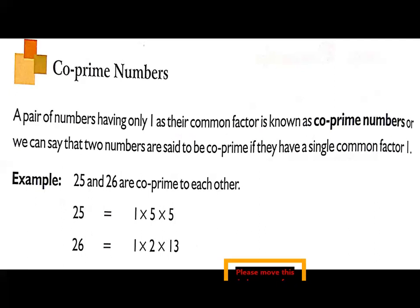These are the three types of numbers we discussed today. The first one is prime numbers, second is composite numbers, and third one is co-prime numbers.